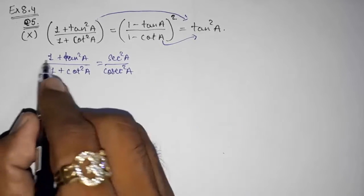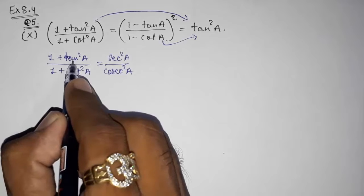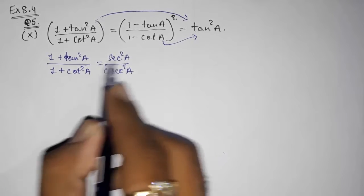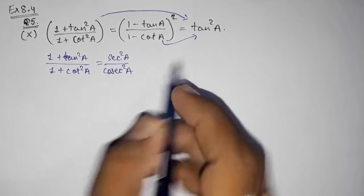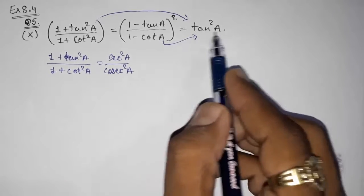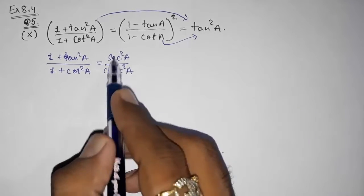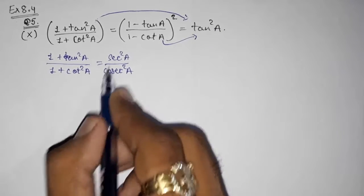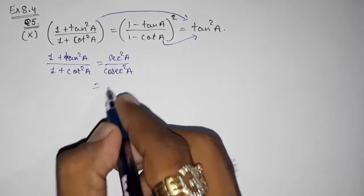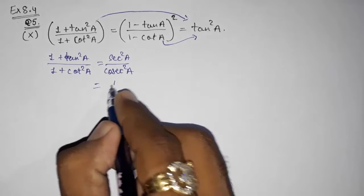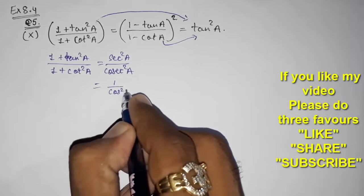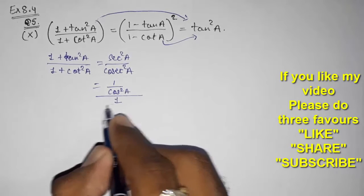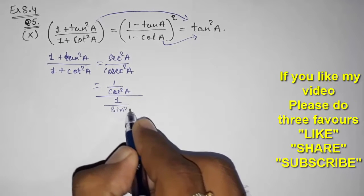By the identity, 1 + tan²a gives you sec²a, and 1 + cot²a gives you cosec²a. Now we want tan²a, so we convert to sine and cos. sec²a means 1/cos²a, upon cosec²a, that is 1/sin²a.